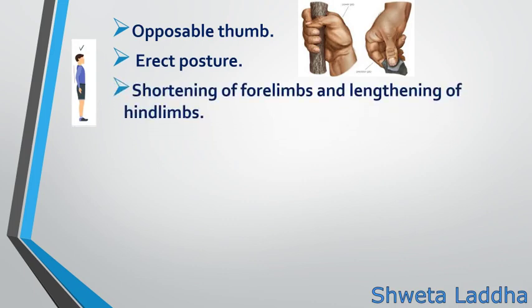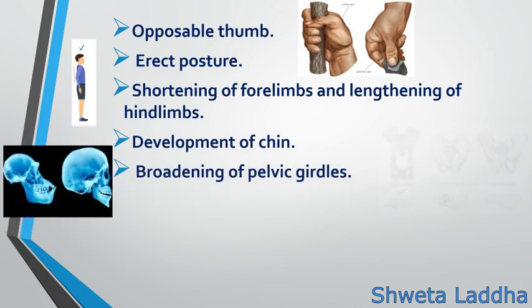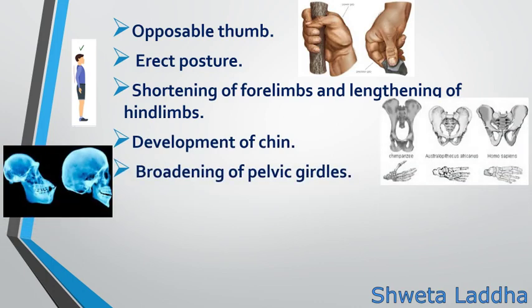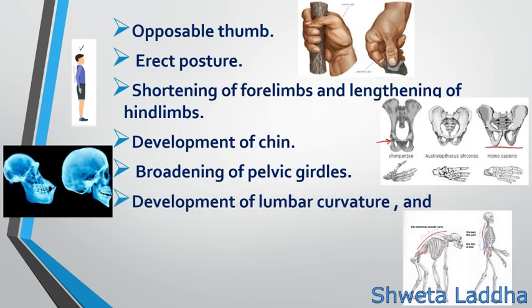Shortening of forelimbs and lengthening of hindlimbs occurred. Development of chin took place. Broadening of the pelvic girdle — chimpanzees had a narrow pelvic girdle, whereas human beings have a broader pelvic girdle. Development of the lumbar curvature also occurred; initially there was just one relatively smooth curve, but later this lumbar curvature developed in human beings.